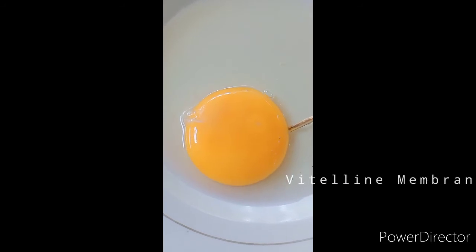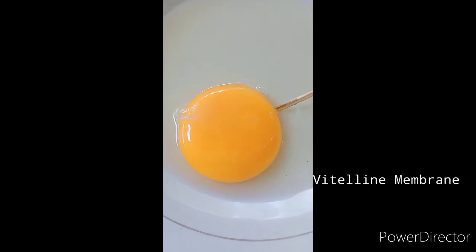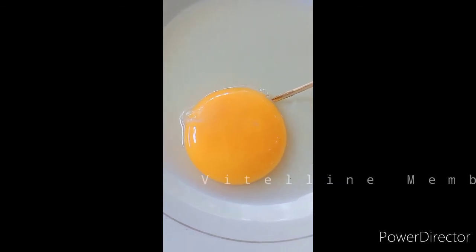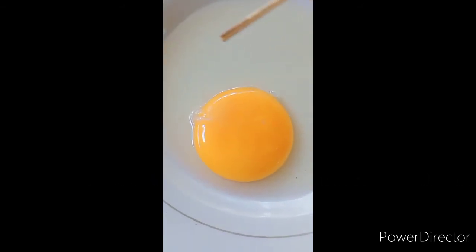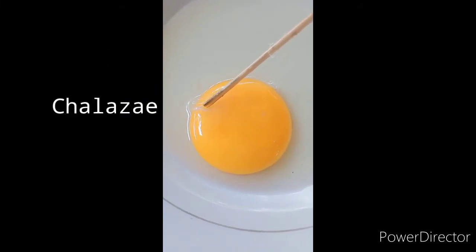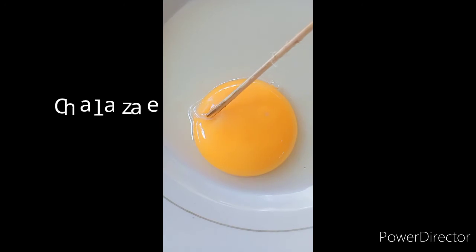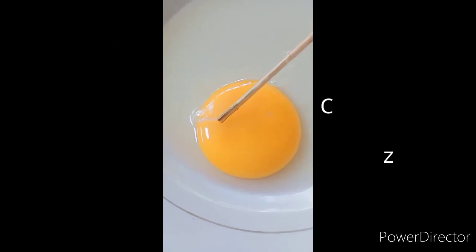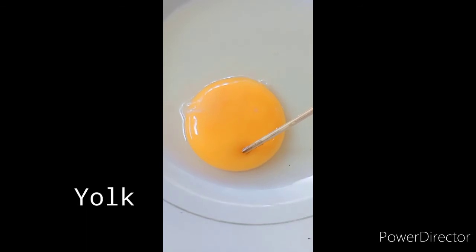A transparent membrane surrounding and secreted by... Chalazae are two formations similar to transparent white color cords located in the longitudinal axis of the egg. The yolk is the yellow part at the center of the egg.